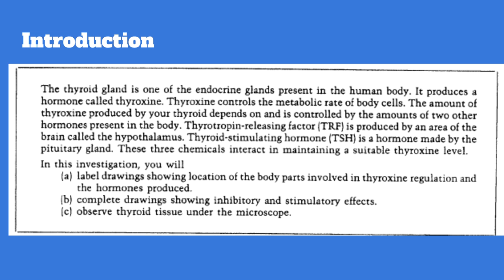TRF is produced by an area of the brain called the hypothalamus. TSH is a hormone made by the pituitary gland. So these three chemicals, TRF, TSH, and thyroxine interact in maintaining a suitable thyroxine level. In this investigation, you're going to label drawings showing the location of body parts involved in thyroxine regulation and the hormones that are produced. And B, you're going to complete drawings showing the inhibitory, the prevention of, or the stimulatory, the encouragement of the production of thyroxine. We will not be doing part C.